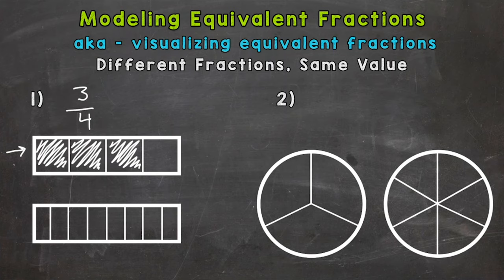Now we need to create an equivalent fraction with that bottom rectangle, which is cut into eighths. So we need to fill it in the same exact amount. For example, if we filled it in one-eighth, would we be filled in the same exact amount as the top rectangle? No. So let's keep going.